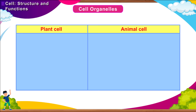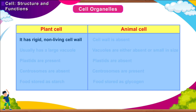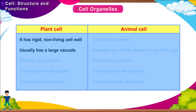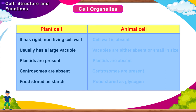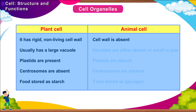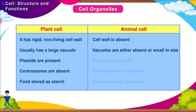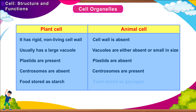Plant cell: It has a rigid, non-living cell wall. Usually has a large vacuole. Plastids are present. Centrosomes are absent. Food is stored as starch. Animal cell: Cell wall is absent. Vacuoles are either absent or small in size. Plastids are absent. Centrosomes are present. Food is stored as glycogen.